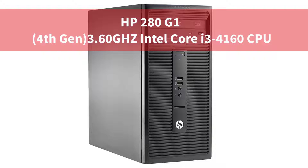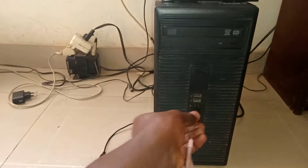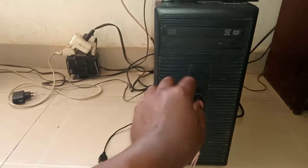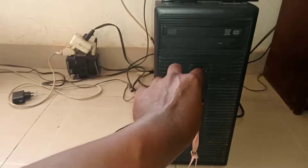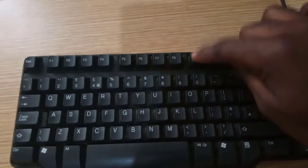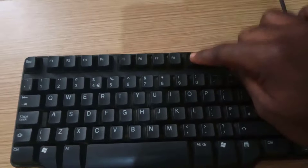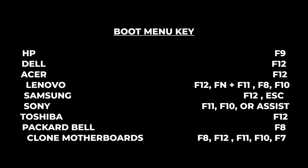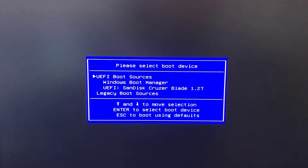I will take you through a step-by-step guide to install a clean Windows 11 on this PC. First, insert your USB flash drive and press the power button to start your PC. Then tap your computer manufacturer's boot menu key to display the boot menu screen — these are some of the boot menu keys for well-known manufacturers. Choose your USB flash drive and press Enter.